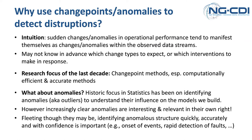Why use change points and anomalies to detect disruptions? The intuition is that a sudden change in operational performance will tend to manifest itself as a change within the observed data stream. If we've got a good set of measures about our processes, we should be able to see directly within the data any changes or aberrations occurring in the process itself. We may not know in advance what types of changes to expect or which interventions to make — and that's all part of the learning journey we're trying to do with this work.